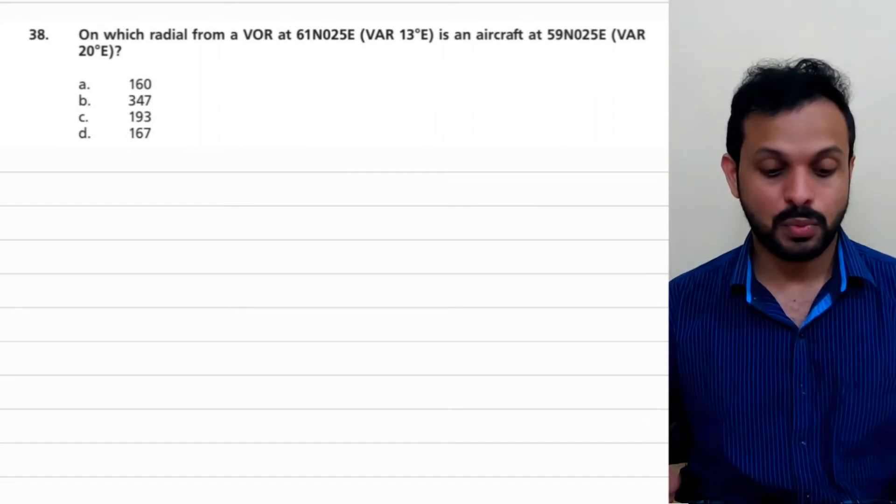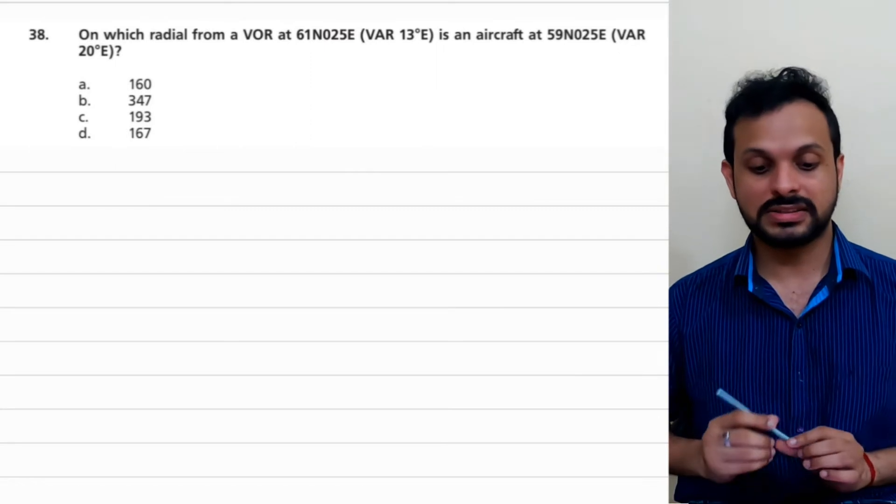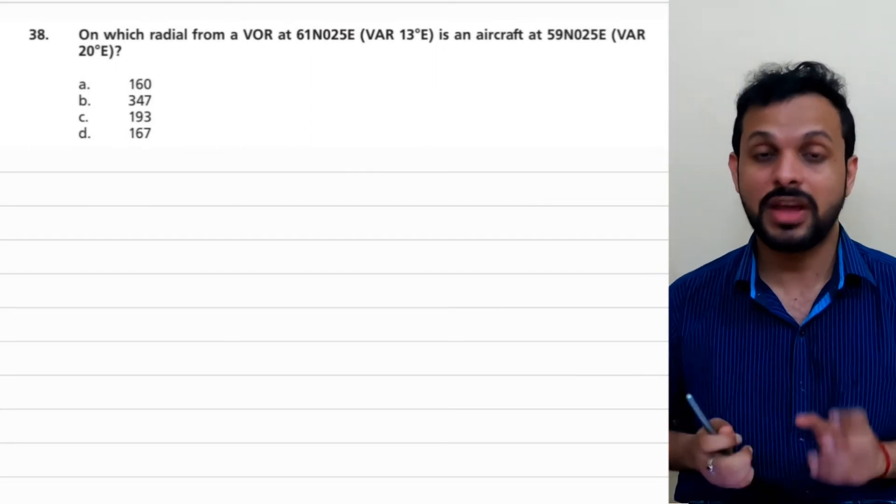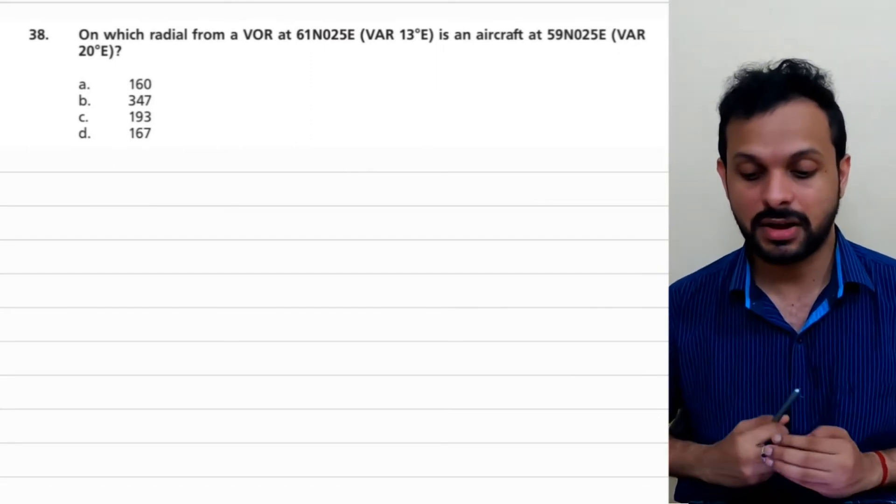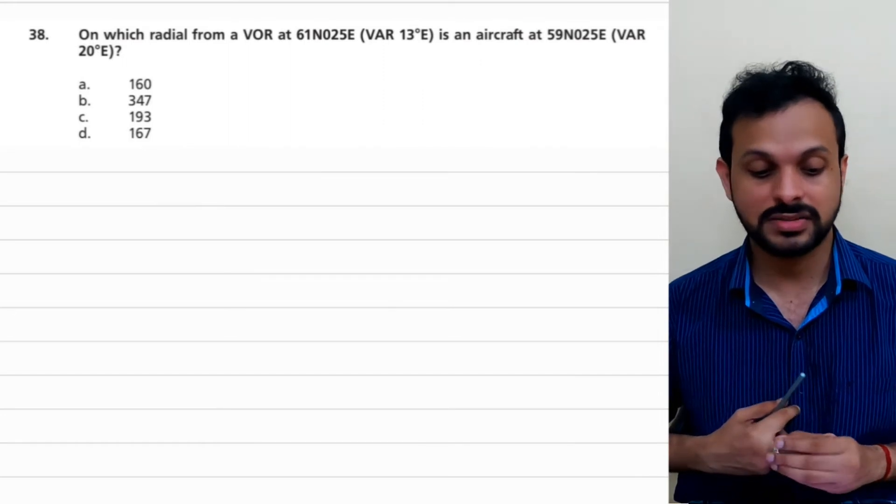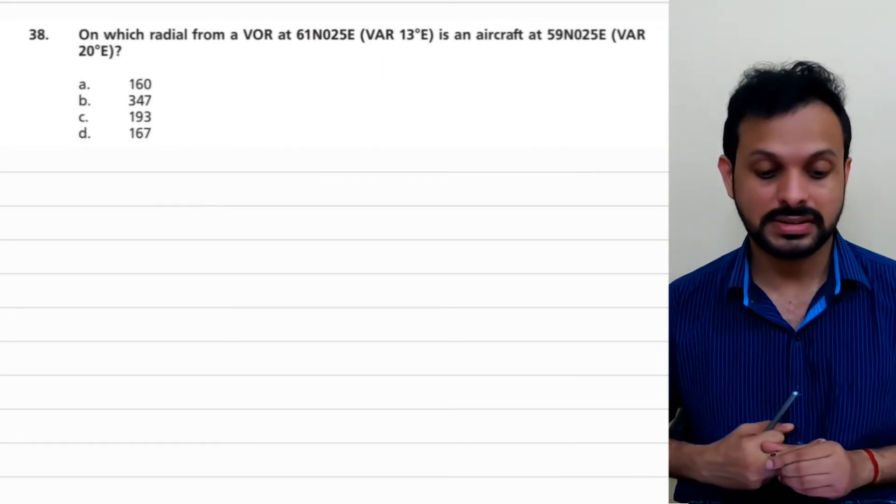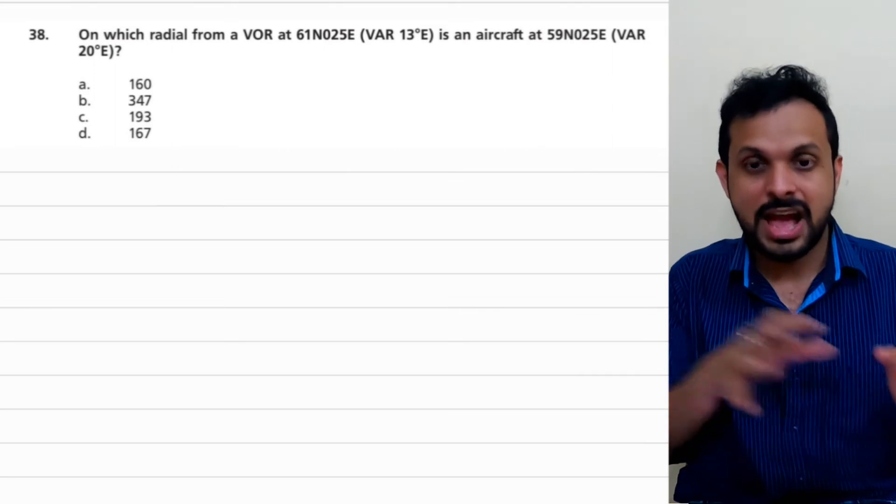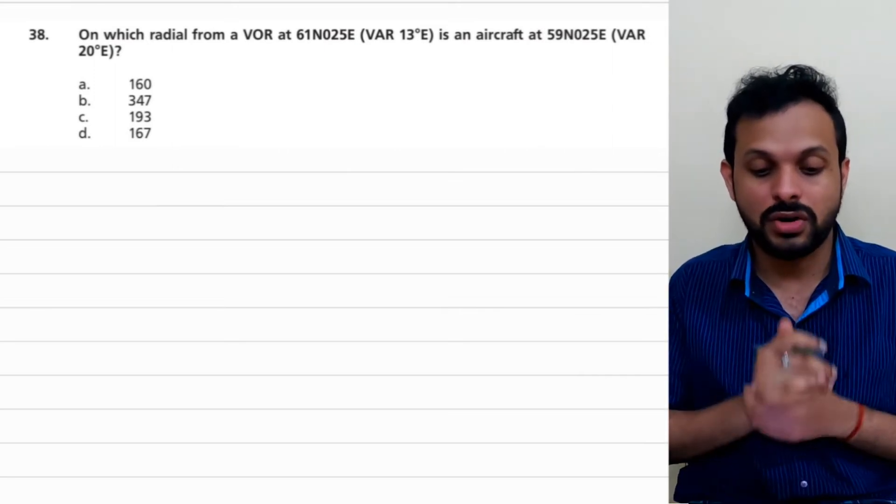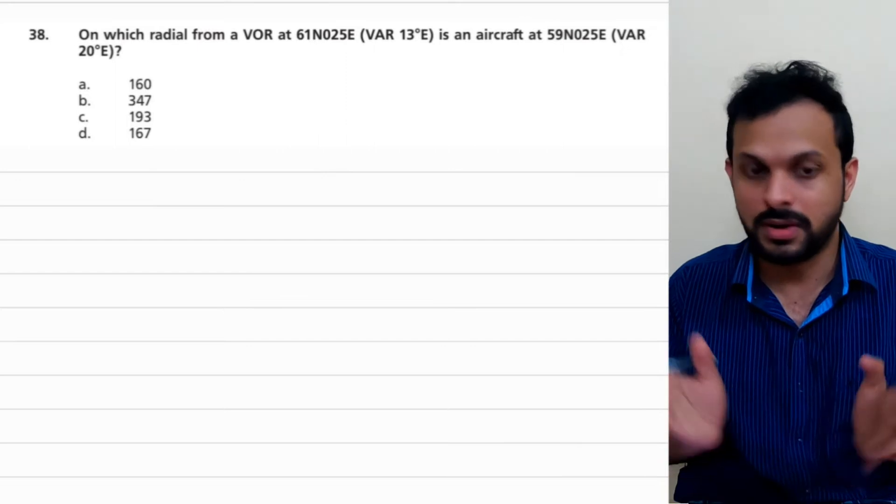Let's look at this question number 38. On which radial from a VOR at 61N025E (VAR 13°E) is an aircraft at 59N025E (VAR 20°E)? So you have an aircraft and a VOR. You're asked to find out what radial is the aircraft on. Simple right.